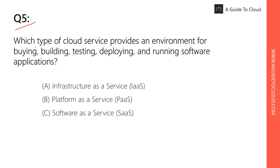Question five: Which type of cloud service provides an environment for building, testing, deploying, and running software applications? The key here is building, testing, deploying, and running software — there's no mention of maintaining a server, patching an OS, or getting OS-level control. This is definitely Platform as a Service (PaaS). Infrastructure as a Service is not needed since this customer doesn't need to manage a server, and SaaS doesn't offer building, testing, or deployment. The right answer is PaaS.